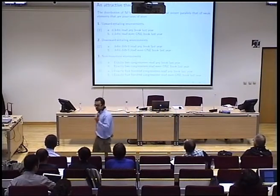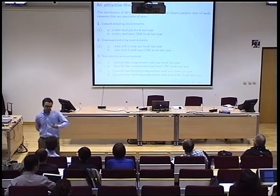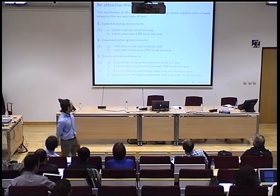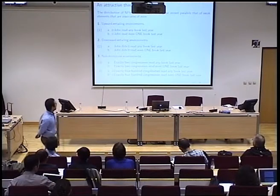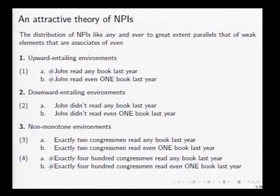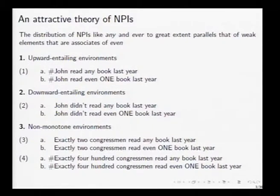A weak expression is an expression that's entailed by alternatives, and an example is 1, which is entailed by the alternatives 2, 3, 4, and so on. We see that both NPIs and 'even one' type expressions are infelicitous in upward environments, in positive sentences. So we know that 'John read any book last year' is bad, but also 'John read even one book last year' is bad. And this doesn't depend on context — whatever context you conjure, this is going to sound odd.